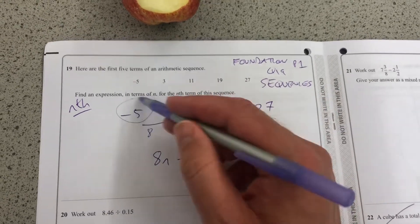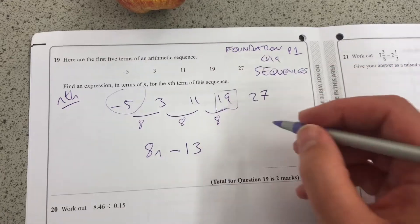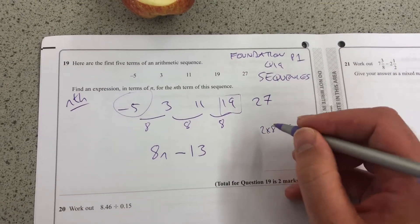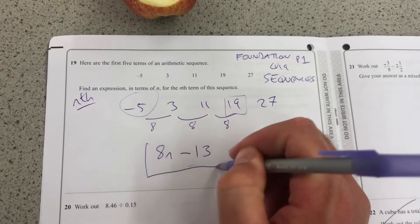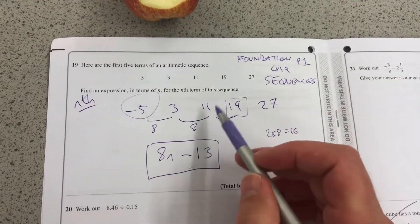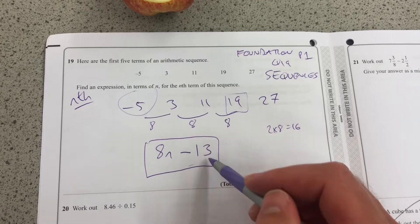Again, I don't like dealing with negative numbers, so I'll look at the second one. 2 times 8 is 16. But how do I go from 16 to 3? I subtract 13. And I can check that again. 24 subtract 13 is 11.